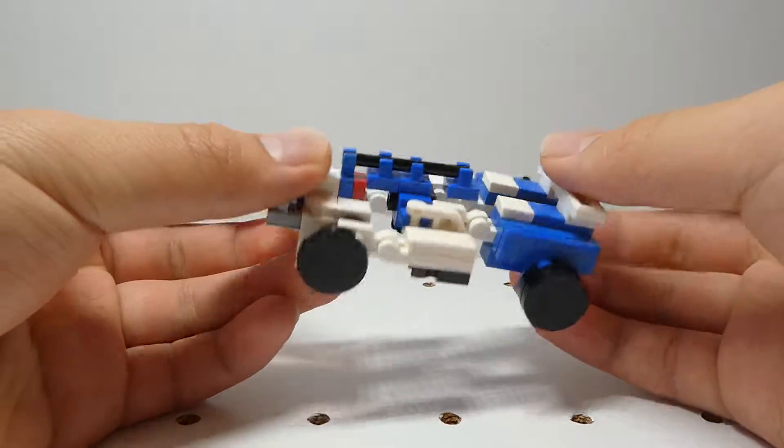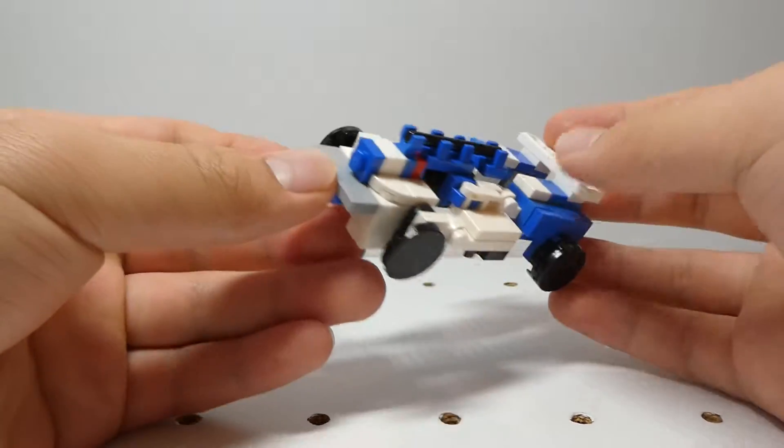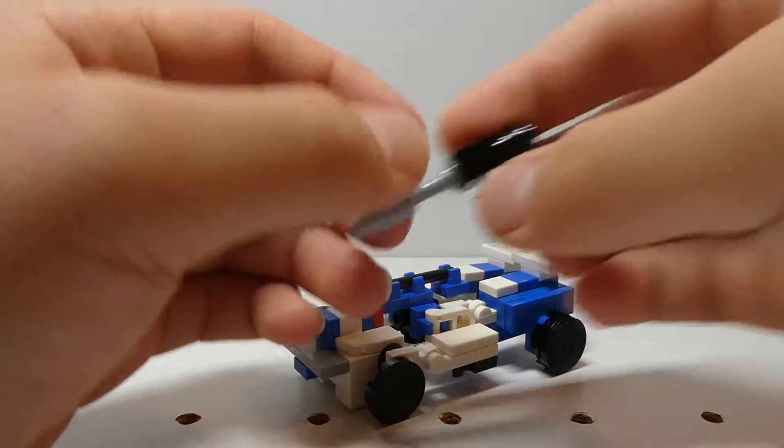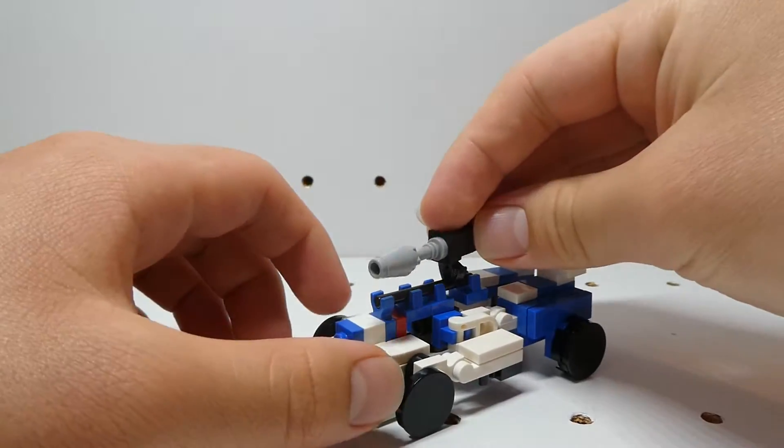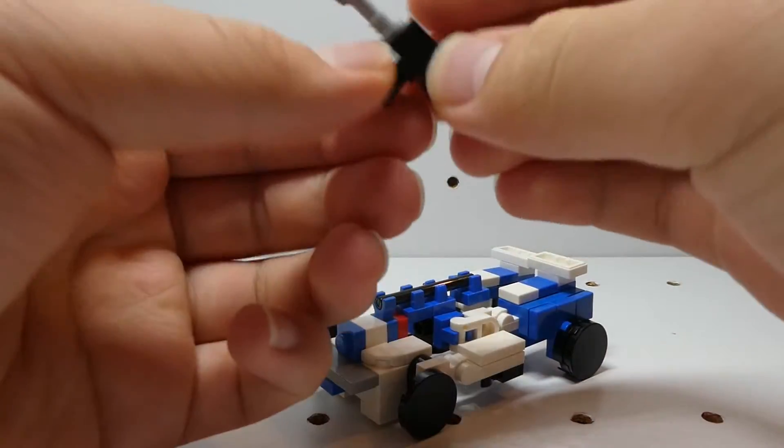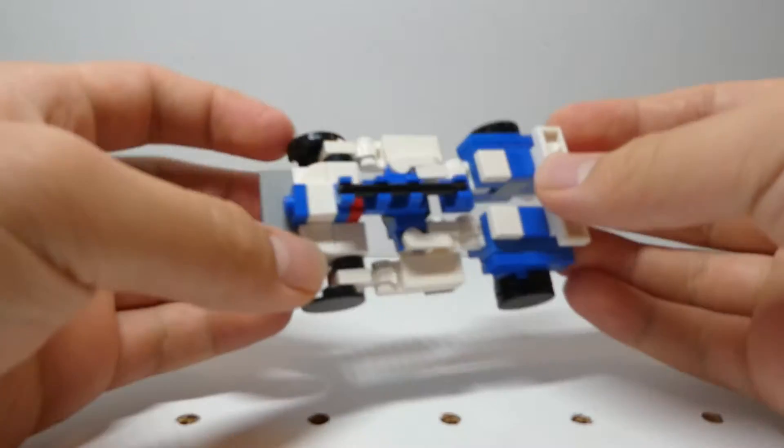It just kind of looks like the robot lying down. I guess in this mode you can take your shoulder cannon and turn the clip and clip it up here as a gun. But that's kind of it for the race car mode.